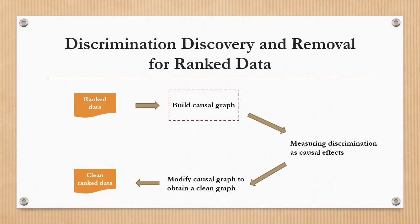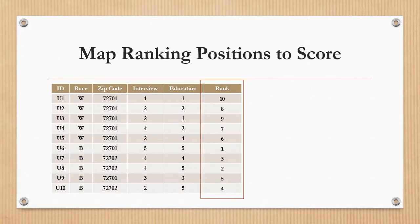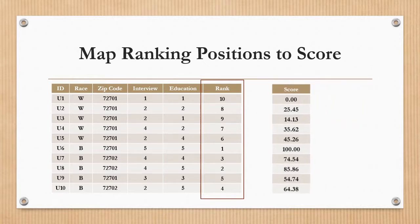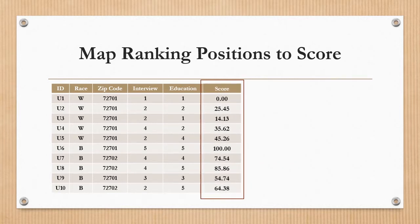The first step is to build the causal graph for the ranked data. We adopt two strategies. Firstly, we map the ranking position to a continuous variable called score by using the Plackett-Luce model, and construct the causal graph from the individual's profile and scores, a mix of categorical and continuous data.